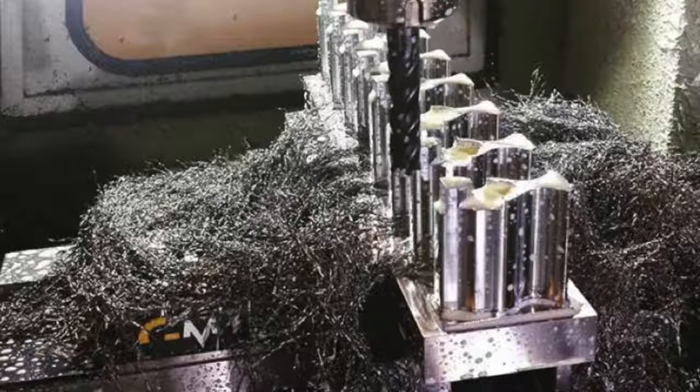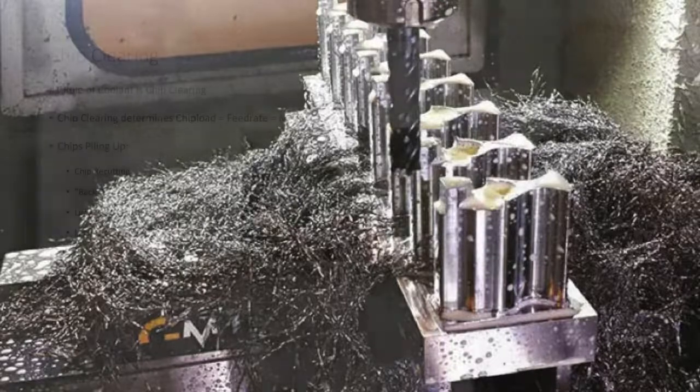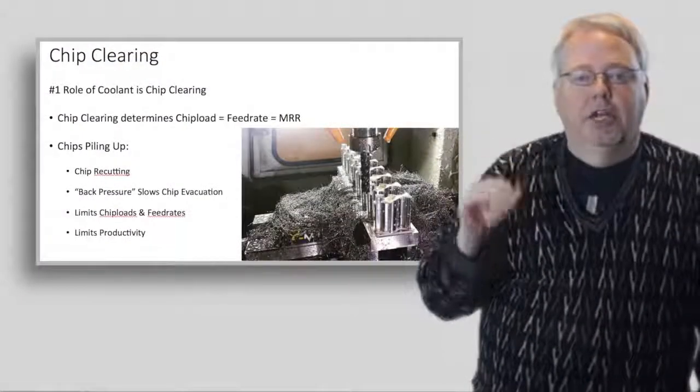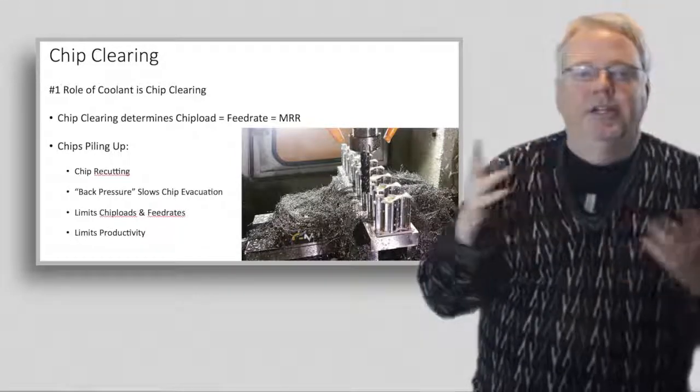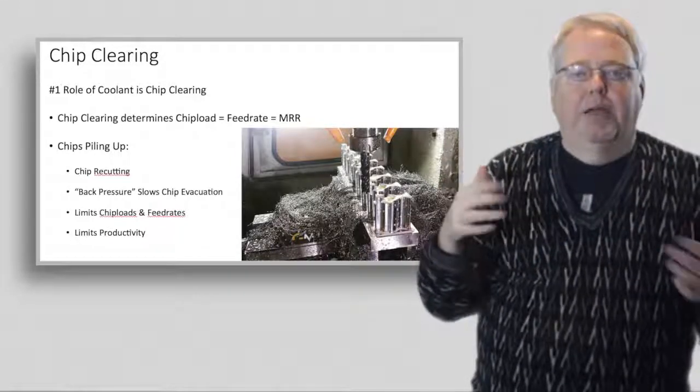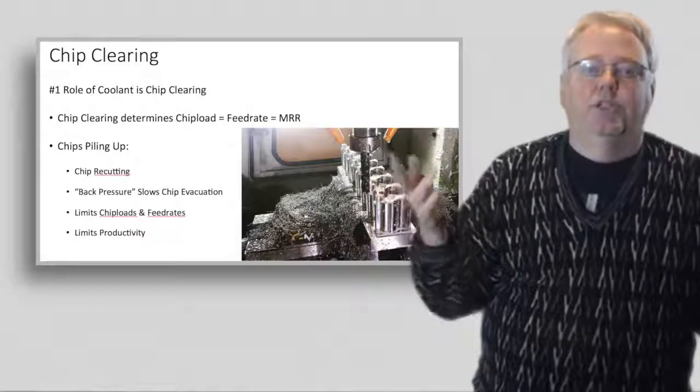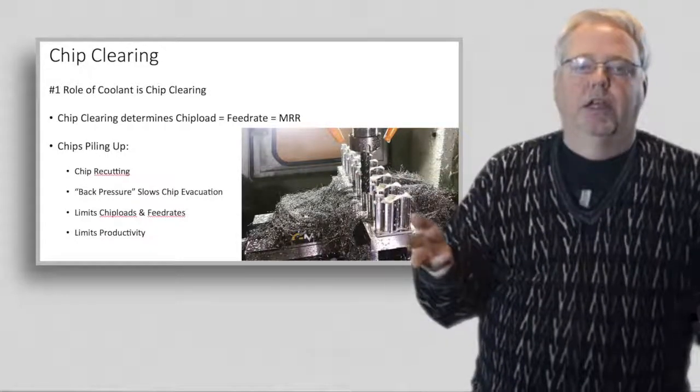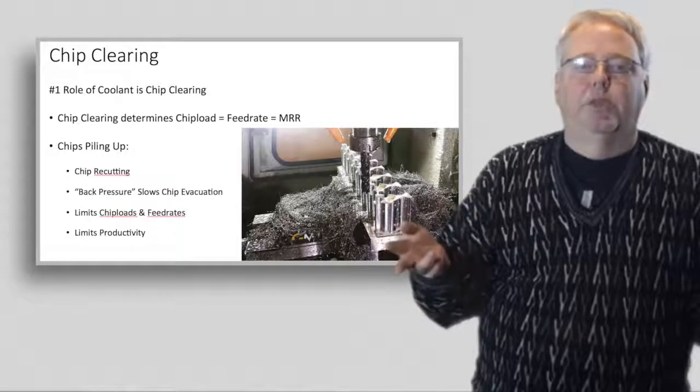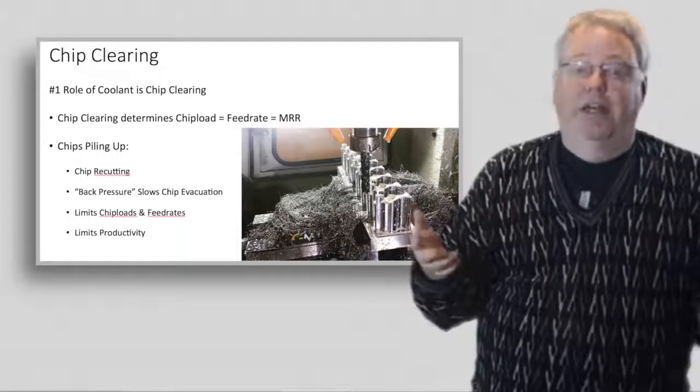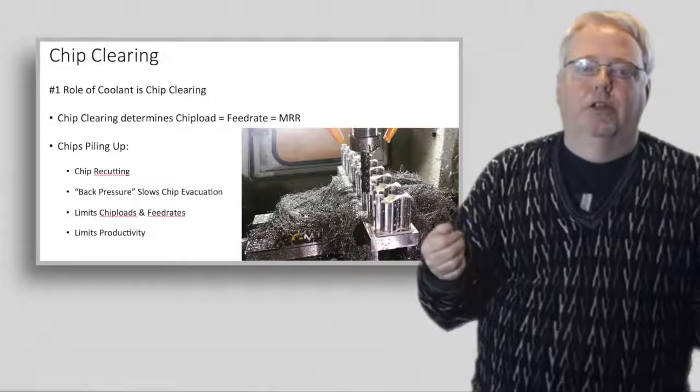Getting the chips out of there is the number one thing your coolant does for you. Did you notice how the allowable chip load goes down as you cut deeper and deeper? Slots have a lower chip load they can take than open peripheral milling. This is all because those are situations where it becomes harder and harder to clear out the chips. The cutter's helix has to do all the work. Think about it being like back pressure on plumbing.